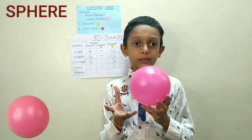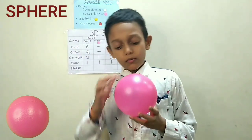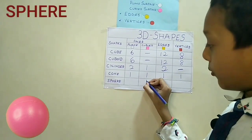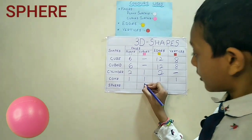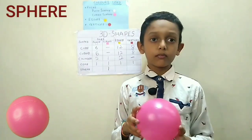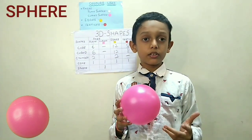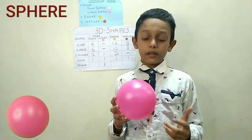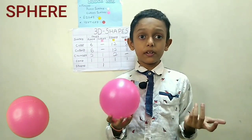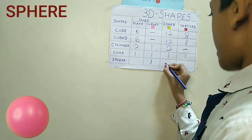I took a sphere. Now let's count the faces of the sphere. 1 curved surface. So we write here 1. Now let's count the edges of the sphere. So there are no edges in the sphere. We will write a dash here.